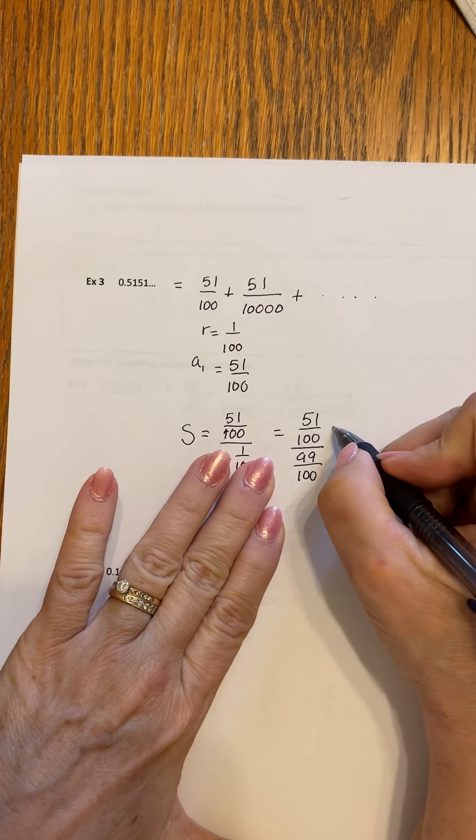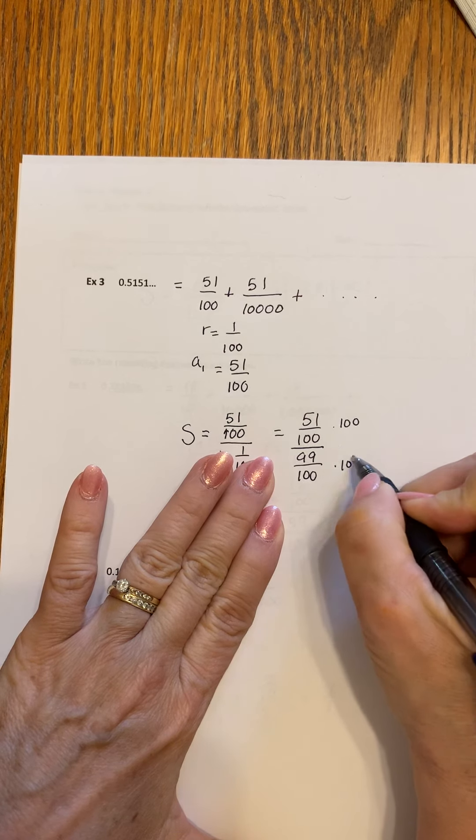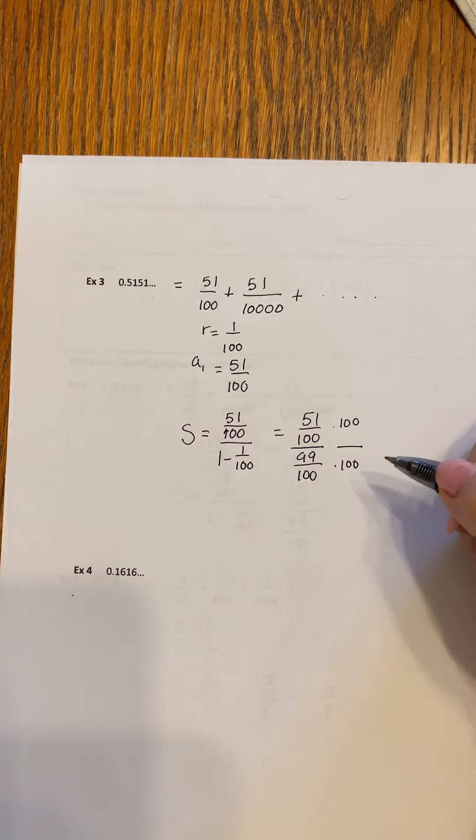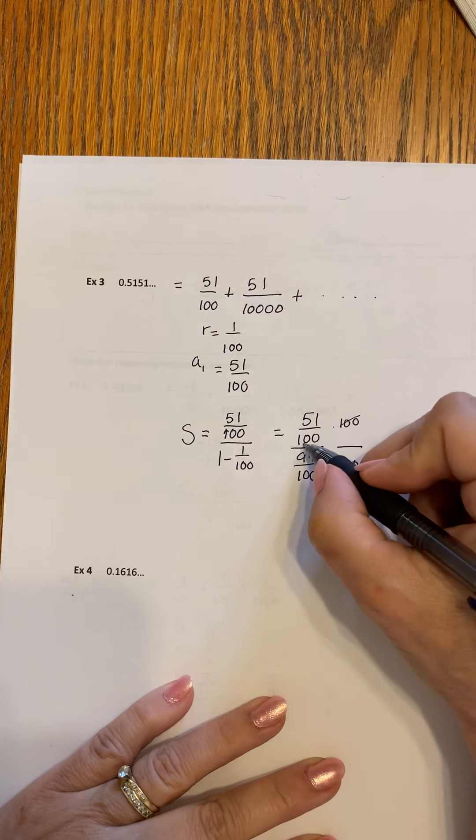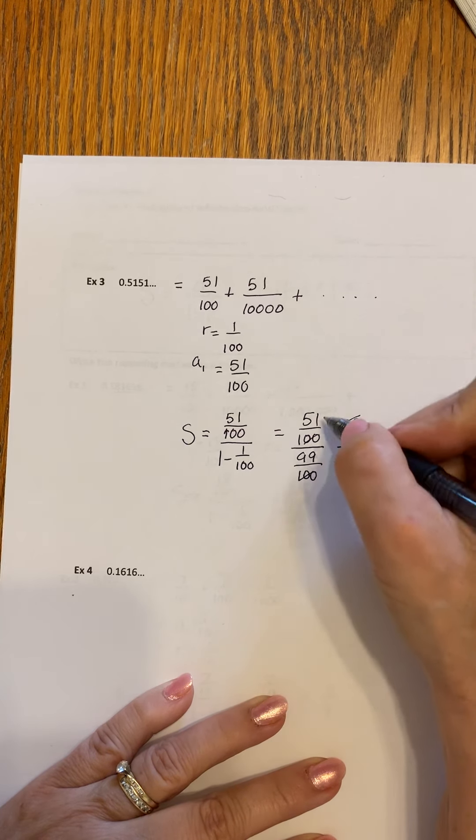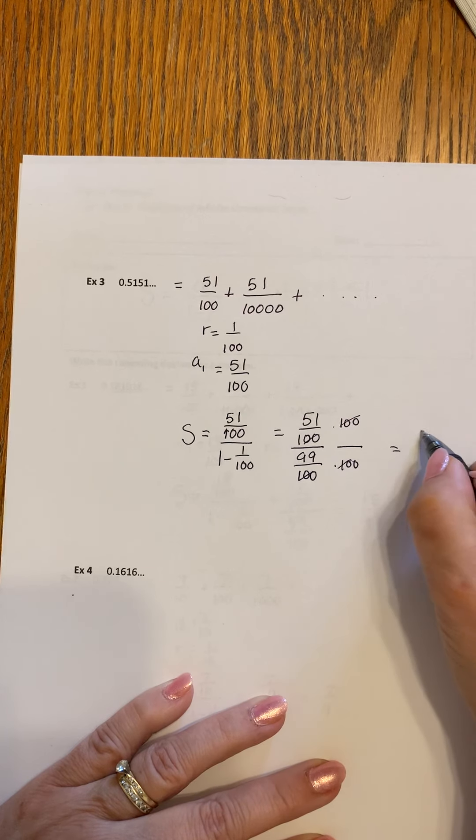If we multiply it, I'm going to show it to you here. If we multiply the top and bottom by 100, basically 100 divided by 100 is 1. We're not changing it. We're changing the way it looks. The hundreds cancel. I apologize for not being more specific with that earlier. It's 51 over 99.